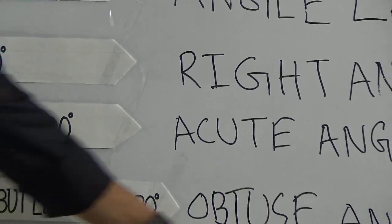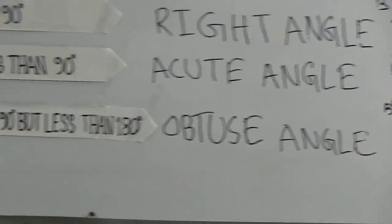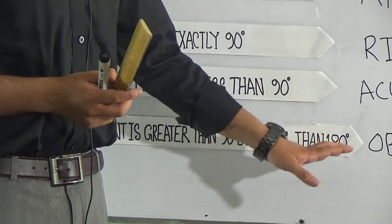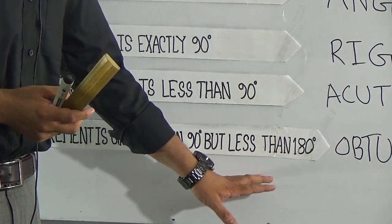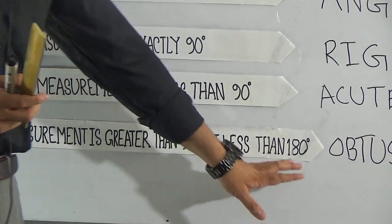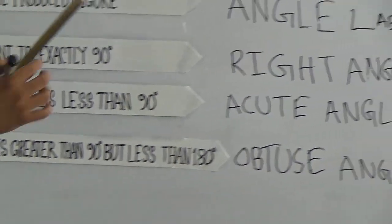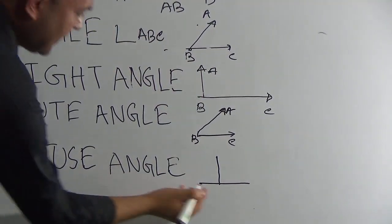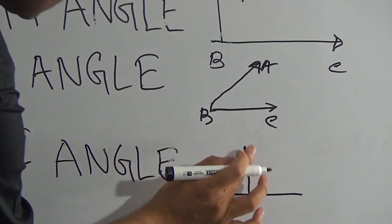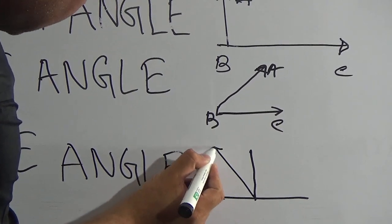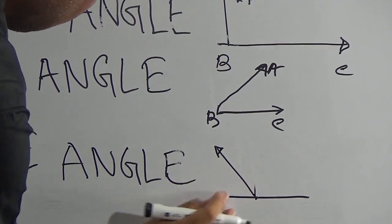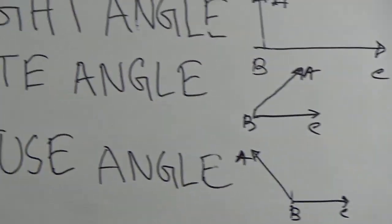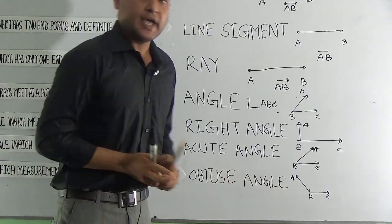Last one is obtuse angle. Obtuse angle is the angle which measurement is greater than 90 degrees but less than 180 degrees. This is 90 degrees. Greater than 90 degrees means this area. If we draw this one, then ABC is an obtuse angle.